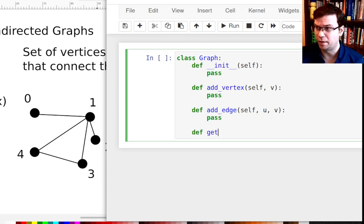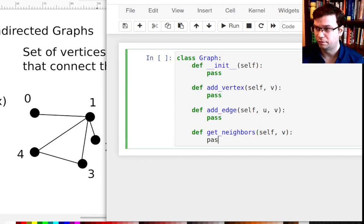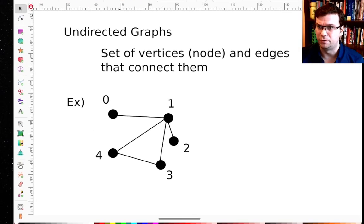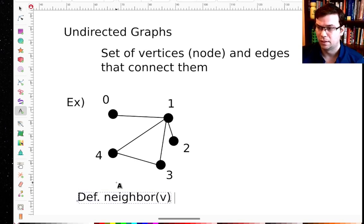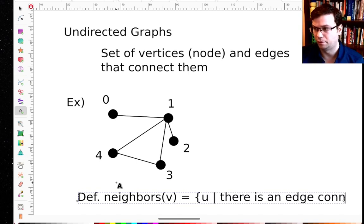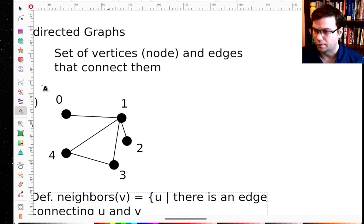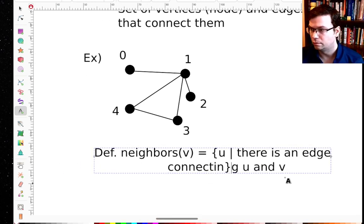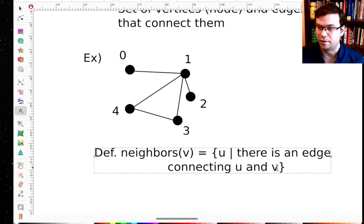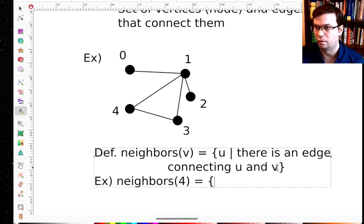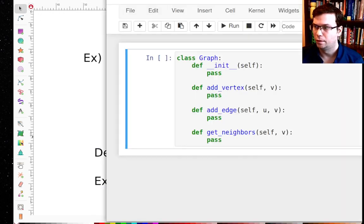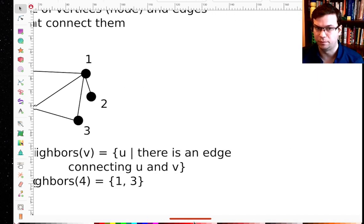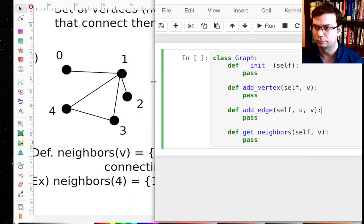The edge takes two parameters because I'm going to add an edge between two vertices. Maybe I also want to be able to get all of the neighbors of a vertex. So a neighbor of a vertex is, I'll write this down here, the neighbors of V is the set of all vertices U so that there is an edge connecting U and V. As an example in this graph, the neighbors of four are one and three. That's going to be very helpful when we get to graph algorithms to be able to say what the neighbors of the graph are.